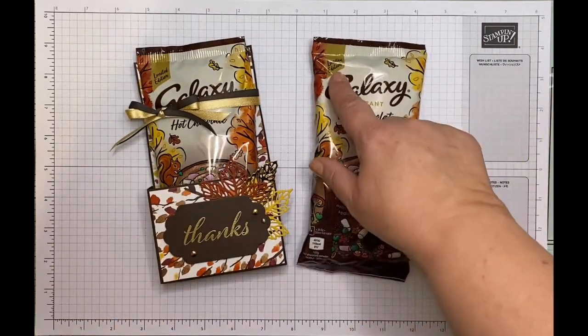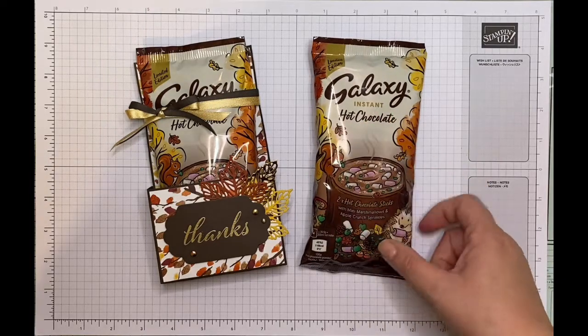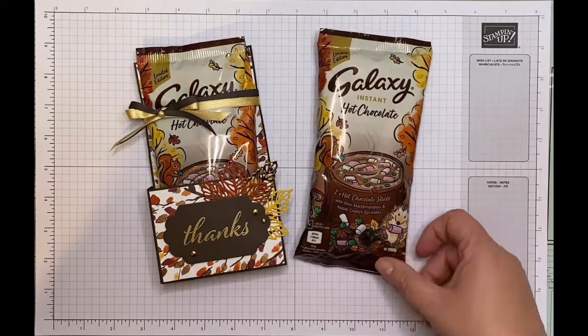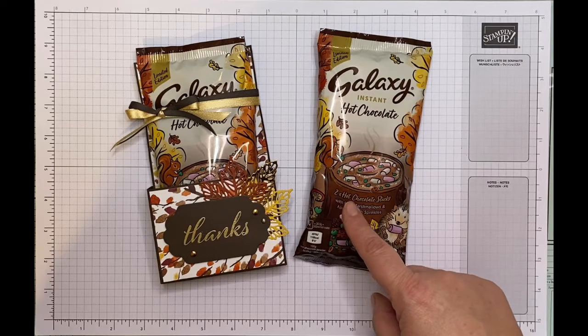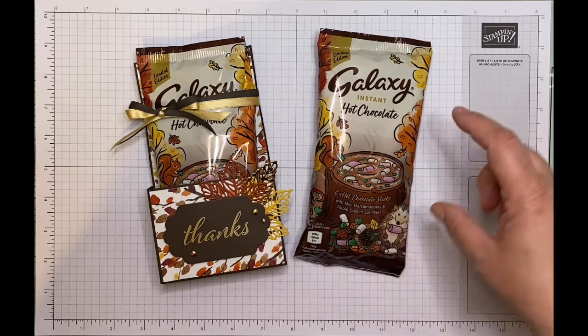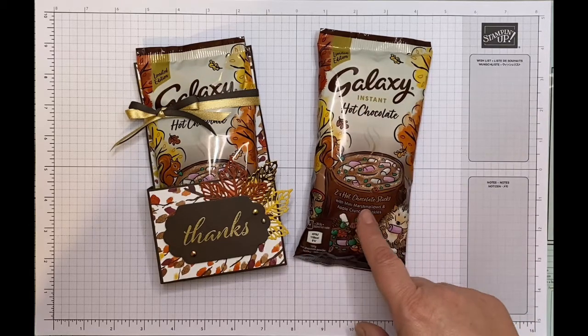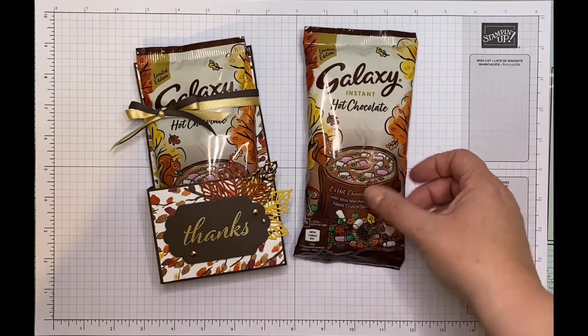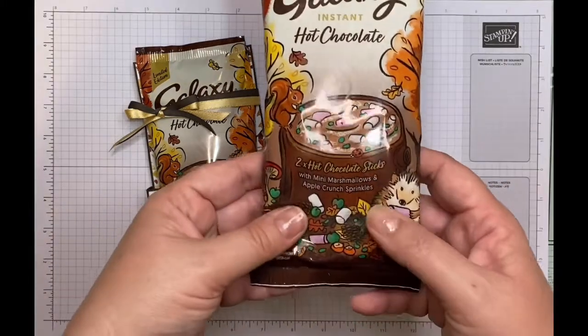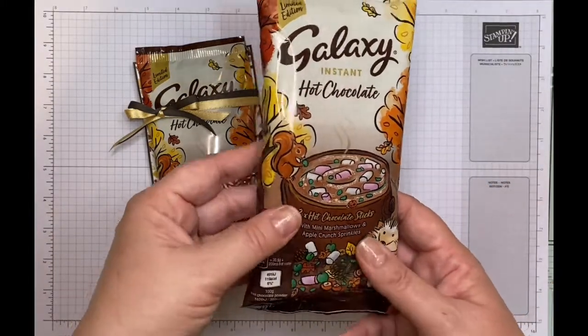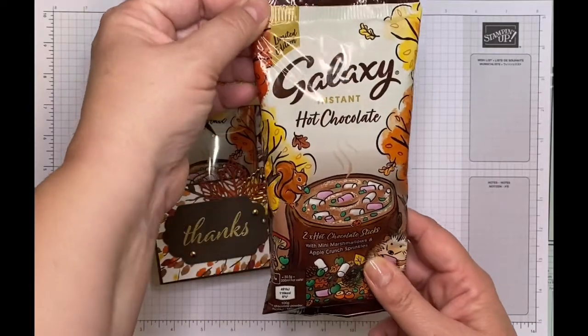I found these limited edition Galaxy hot chocolates in little packs. They've got two of the Galaxy hot chocolate sachets in, two sticks, a pack of mini marshmallows, and apple crunch sprinkles. I just love the pack. I thought it was such a beautiful autumnal pack.